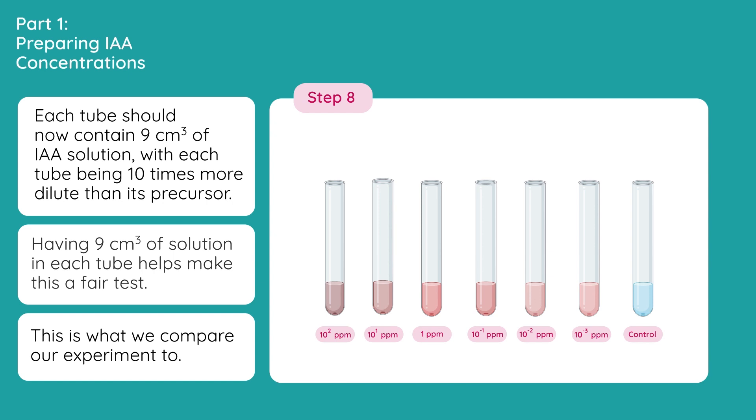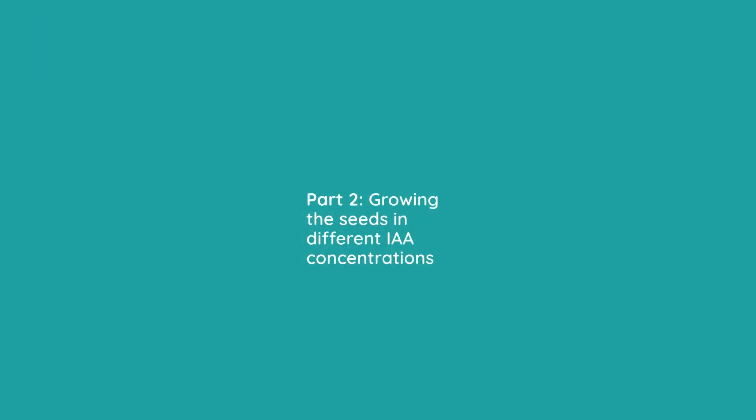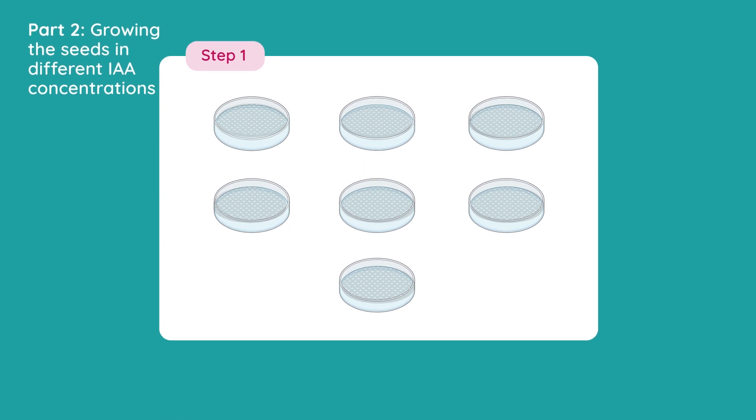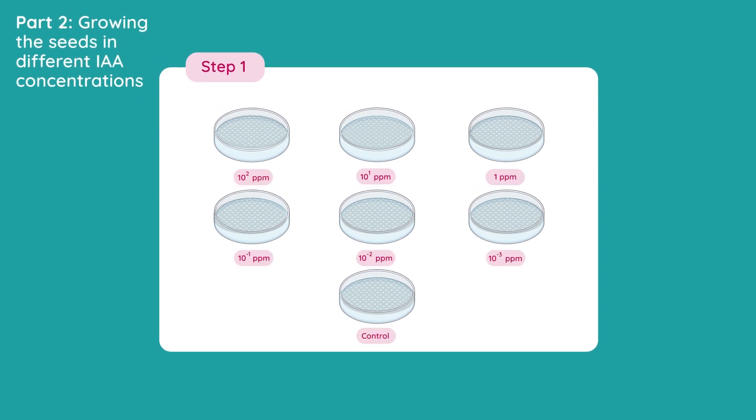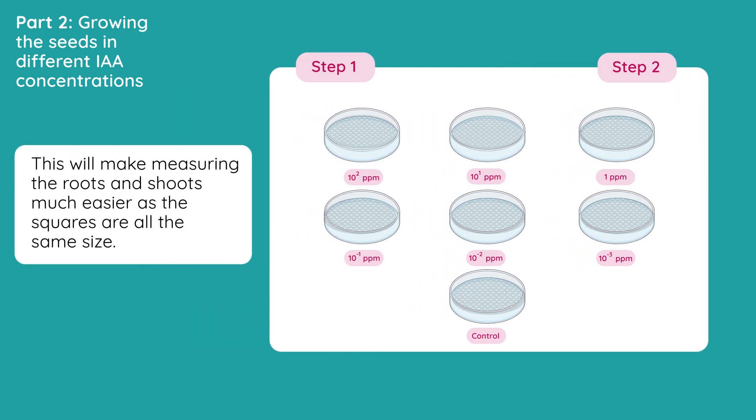Part 2: Growing the seeds in different IAA concentrations. Label 6 petri dishes with the concentrations from each tube, and label another one, the control. Line the base of each petri dish with an acetate grid sheet. This will make measuring the roots and shoots much easier, as the squares are all the same size, usually 1 millimeter in length.